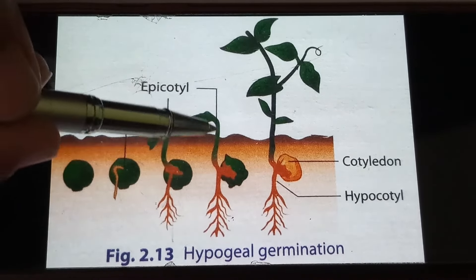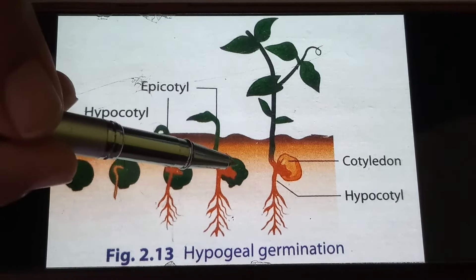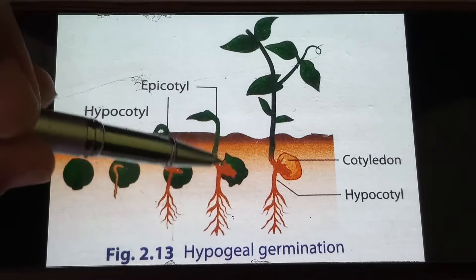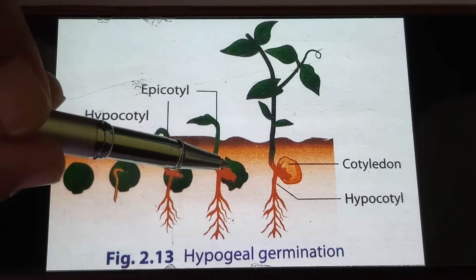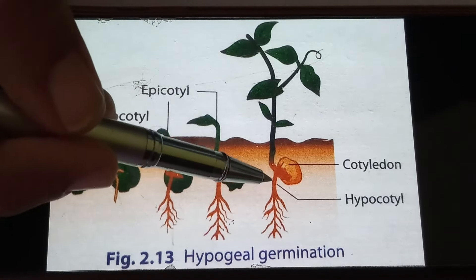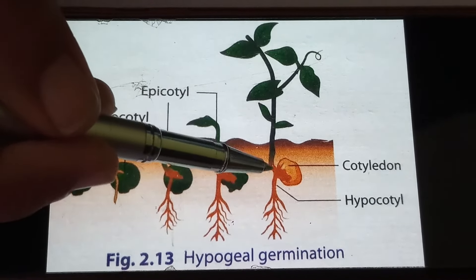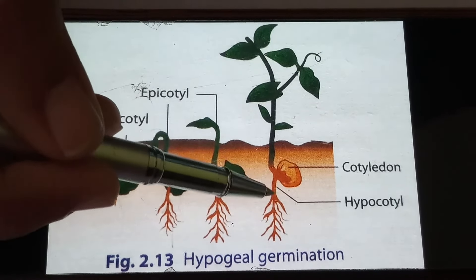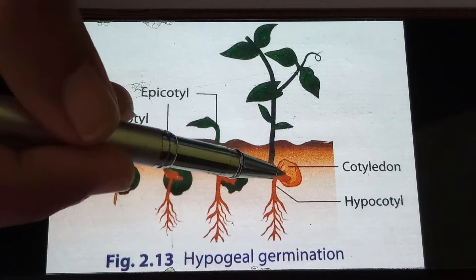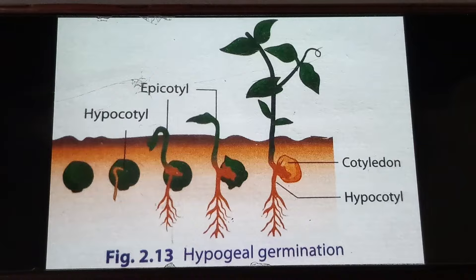The seed starts germinating — the radicle develops first, and then the shoot develops and comes above the soil. But in this case, the hypocotyl is small in size; it does not elongate. This is the reason why the cotyledon remains below the soil. The hypocotyl is short while the epicotyl is elongated, so the cotyledon stays below the soil, and this type is known as hypogeal germination.